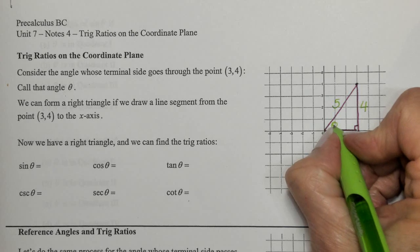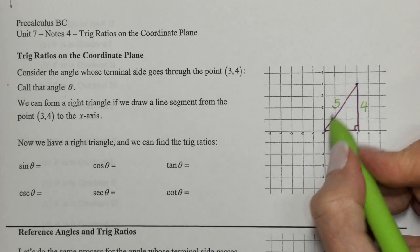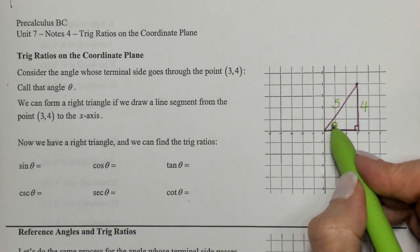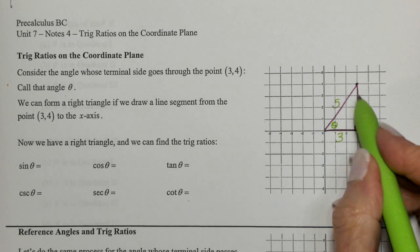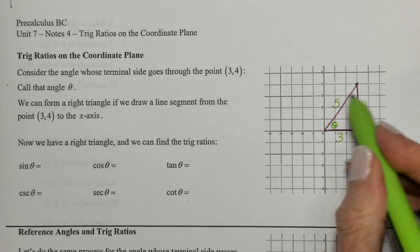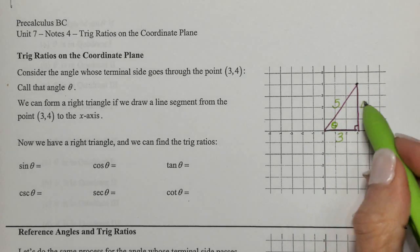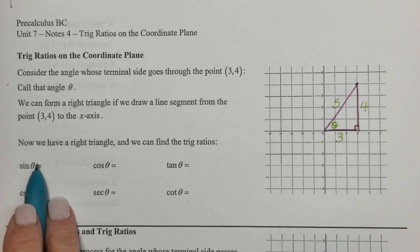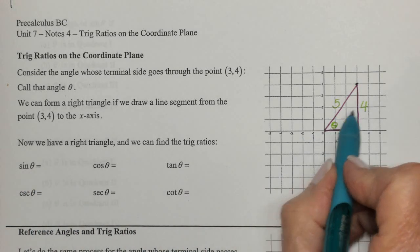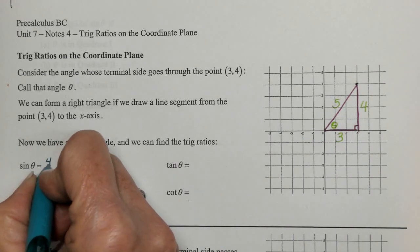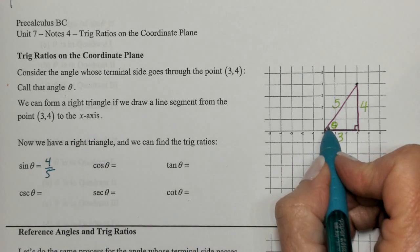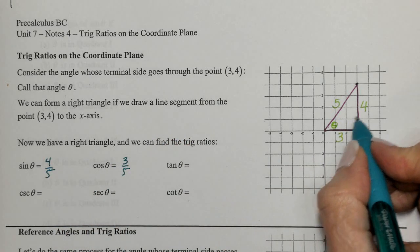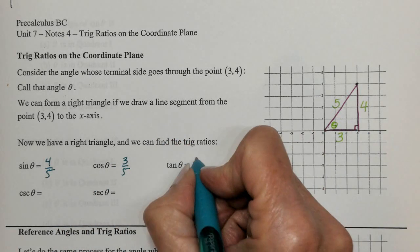This is theta. We can find all of the trig functions of theta — the angle described by this situation, which goes through the point. Sine is opposite over hypotenuse: 4 over 5. Cosine is adjacent over hypotenuse: 3 over 5. Tangent is opposite over adjacent: 4 over 3.